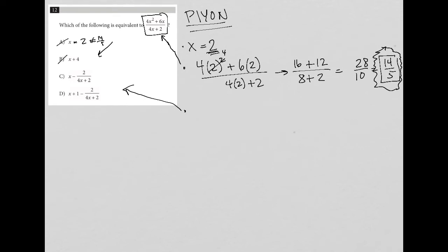B is also immediately out, because this is equal to 6, which is also not equal to 14 5ths.